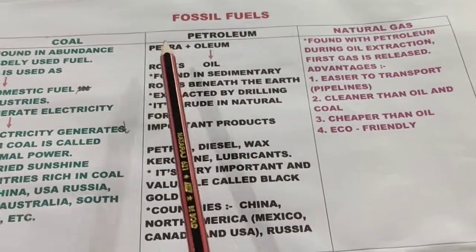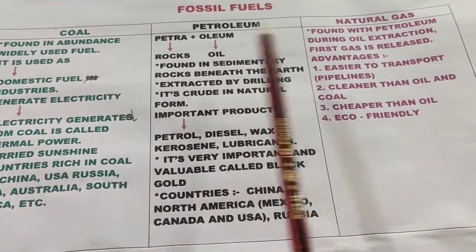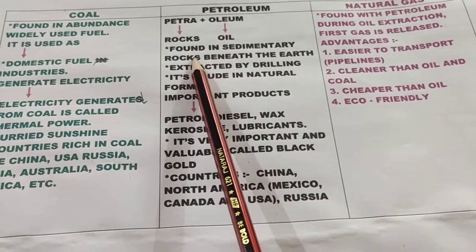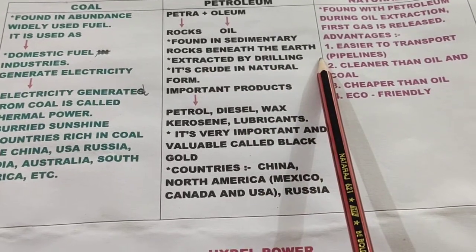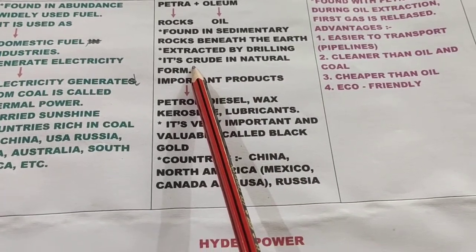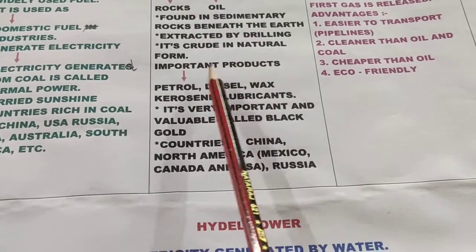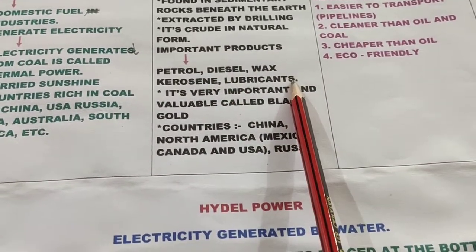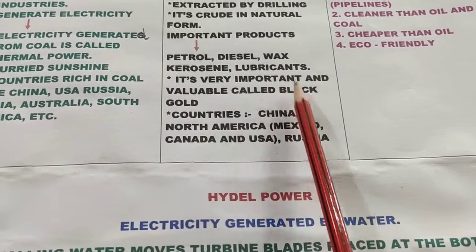Petroleum comes from 'petra' meaning rocks and 'oleum' meaning oil — so it means oil found in rocks. Petroleum is found in sedimentary rocks beneath the earth and is extracted by drilling. In its natural form it is very crude, mixed with impurities, and is refined in a refinery. From this crude petroleum, important products we get are petrol, diesel, kerosene, wax, and many different lubricants.